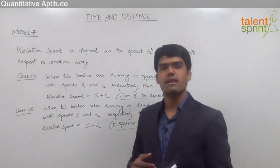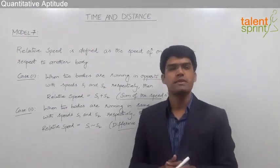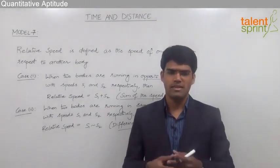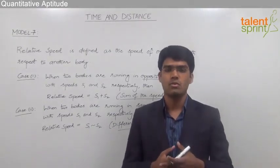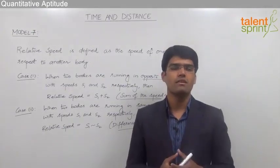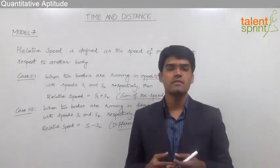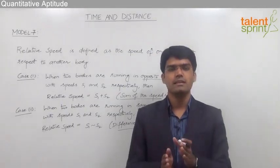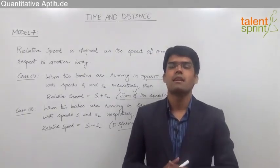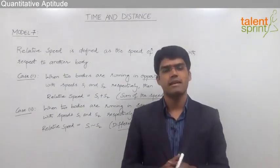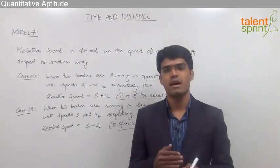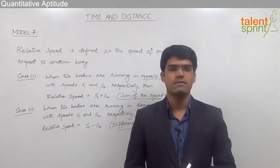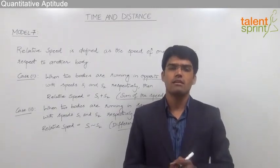For example, let us assume two trains are running in opposite directions on two different tracks at speeds of 40 kilometers per hour and 60 kilometers per hour respectively. The relative speed is the sum of their speeds: 40 plus 60 equals 100 kilometers per hour. Similarly, if both trains run in the same direction at 60 and 40 kilometers per hour, the relative speed is the difference: 60 minus 40 equals 20 kilometers per hour.